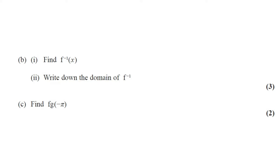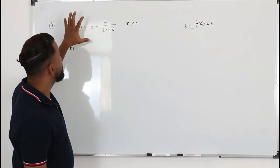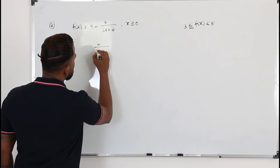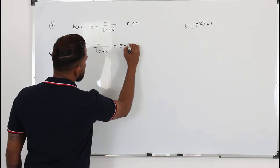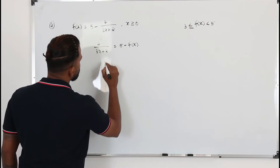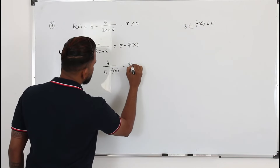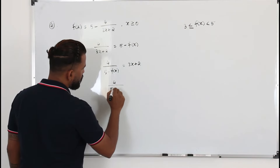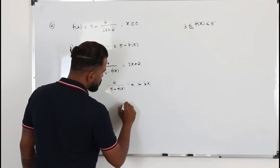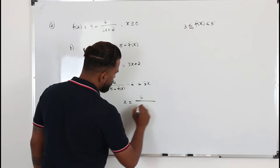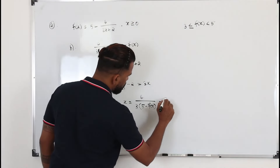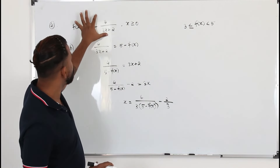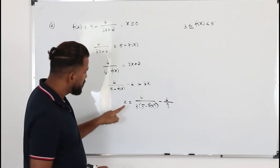Part B: find f inverse of x and write down the domain of f inverse. This question is worth three marks. To find the inverse function, make x the subject. Rearranging: 4 over (3x plus 2) equals 5 minus f(x), then swap to get 4 over (5 minus f(x)) equals 3x plus 2. Bring the 2 across and divide by 3.